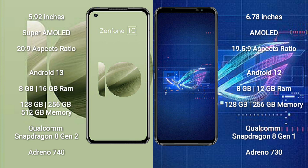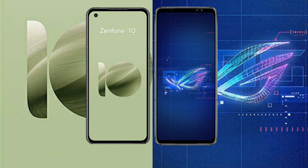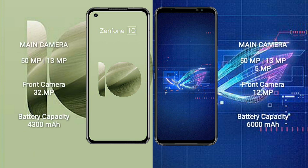The Asus ROG Phone 6 comes with 8GB, 12GB, or 16GB RAM and 128GB, 256GB, or 512GB internal storage, with a Qualcomm Snapdragon 8 Gen 1 processor and Adreno 730 GPU.